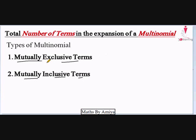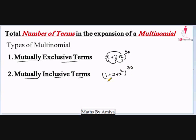Mutually exclusive means there is nothing common in the terms. For example, if we have a multinomial x plus y plus z raised to power 30, this is a mutually exclusive term because the HCF of any two terms is independent of the unknown. Mutually inclusive means there should be something common, like 1 plus x plus x squared raised to power 30, where the HCF of two terms is x, which is unknown.